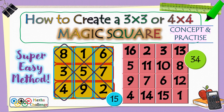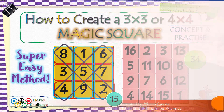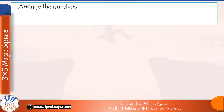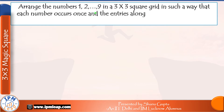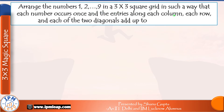So now that you know why it is called a magic square, let's discuss how to create one. The objective is clear: we have to arrange the numbers 1 through 9 in a 3x3 square grid such that each number occurs once, and the entries along each column, each row, and each of the two diagonals add up to the same value. So let's discuss how to place those numbers to create a 3x3 magic square.